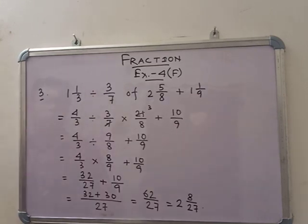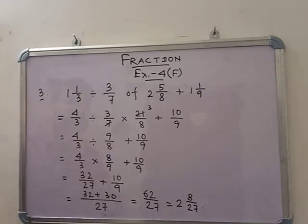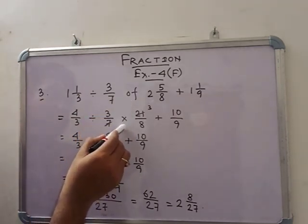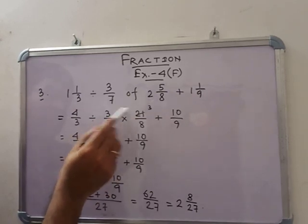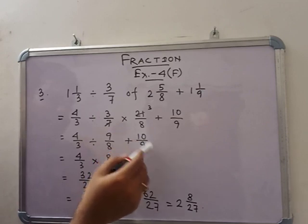In number 3, see that: 1 of 1 by 3 divided by 3 by 7 of 2 of 5 by 8 plus 1 of 1 by 9. Firstly, write into the improper fraction from mixed fraction. So: 4 by 3 divided by 3 by 7 into 21 by 8 plus 10 by 9. First we have to do the 'of' work — that means this is into, this is cancelled. That means 3 into 3, 9 by 8. So: 4 by 3 divided by 9 by 8 plus 10 by 9.